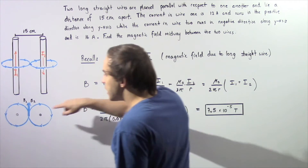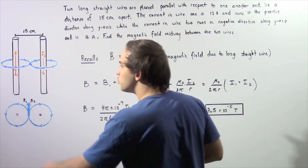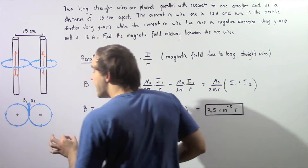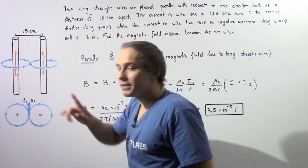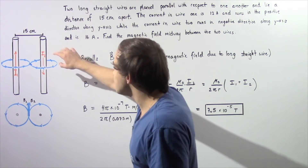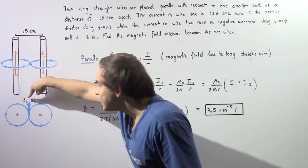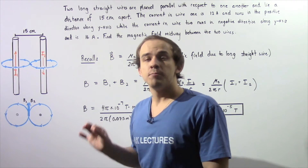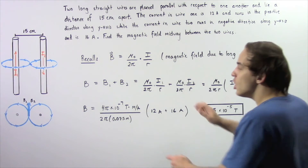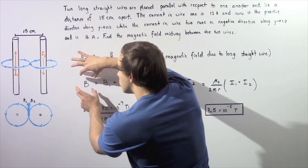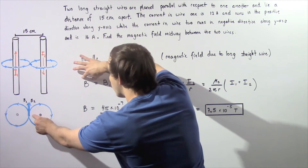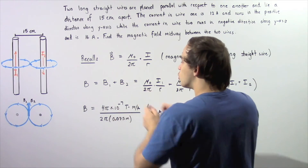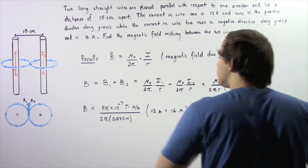Notice that B1, produced by I1 in wire one, and B2, produced by I2 in wire two, point in the same exact direction at the midpoint. Since both vectors point in the same direction, when we calculate the total magnetic field midway between the wires we simply sum the two quantities: B_total = B1 + B2.